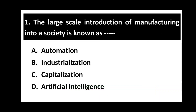Question number one. The large-scale introduction of manufacturing into a society is known as. Options are: automation, industrialization, capitalization, artificial intelligence. The right option is B, industrialization. The large-scale introduction of manufacturing into a society is known as industrialization.